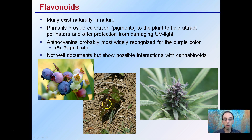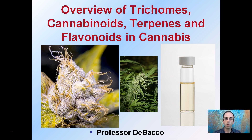As poison ivy gets older, it will lose those pigments and have more of that chlorophyll. It's not well documented, but it shows the possible interactions with cannabinoids, so flavonoids may also have some interactions. Hopefully that gives you just that general overview of these very complex products that cannabis can produce, so you can understand at least a little bit of the difference between them.